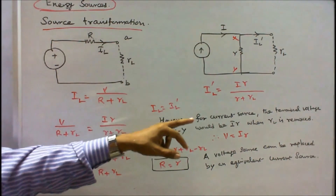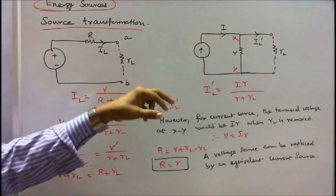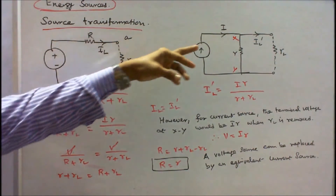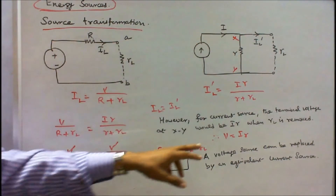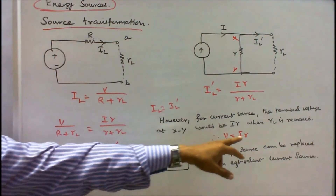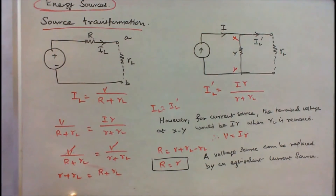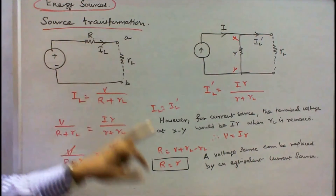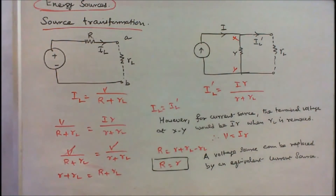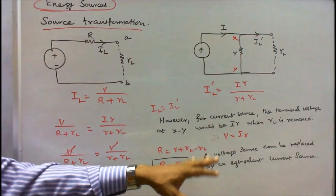Setting IL equal to IL-dash, we equate V divided by (R plus RL) equal to I times R divided by (R plus RL). For the current source, the terminal voltage at XY when RL is removed would be I times R. Therefore V equals I times R. Substituting IR with V and simplifying, we get that the series resistance R equals the parallel resistance r. This means a voltage source can be replaced by an equivalent current source.